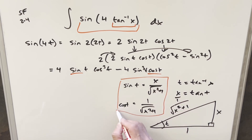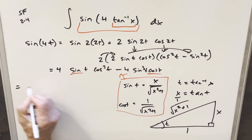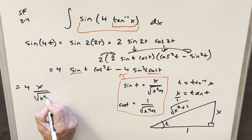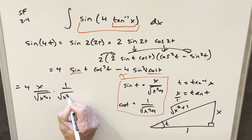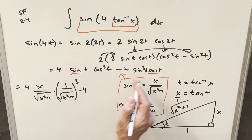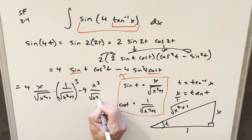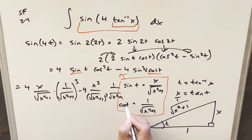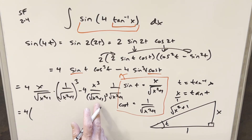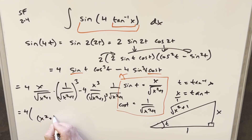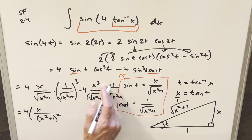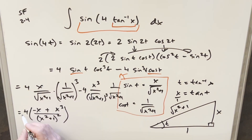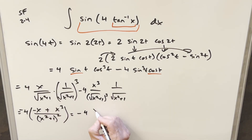Taking those values and plugging back in: we have 4 out front, sin(t) = x/√(x²+1), and cos³(t) = 1/(x²+1)^(3/2). Then minus 4, with sin³(t) giving x³/(x²+1)^(3/2), times cos(t) = 1/√(x²+1). Both terms share the denominator (x²+1)², so factoring 4 out and combining, we get minus 4x times (x² − 1)/(x²+1)².